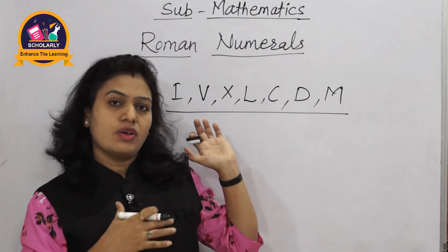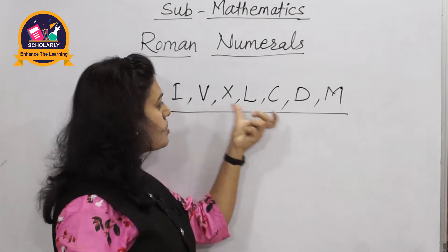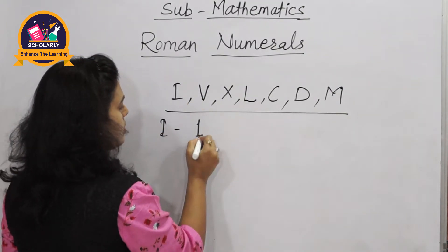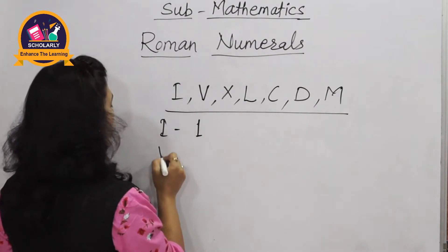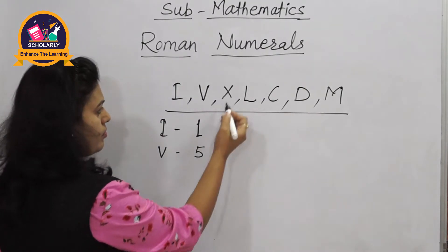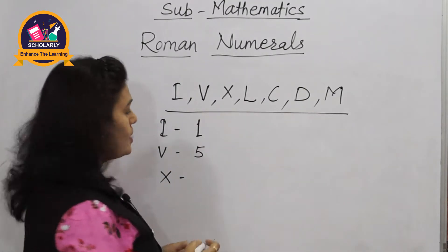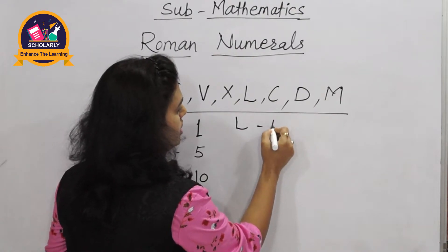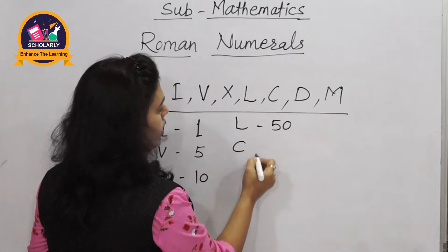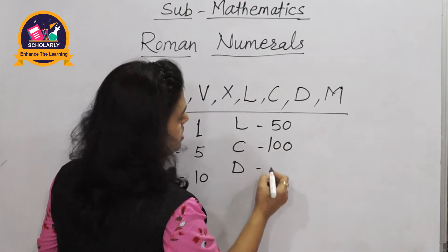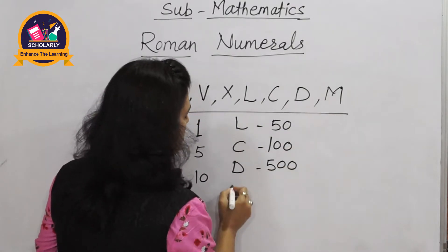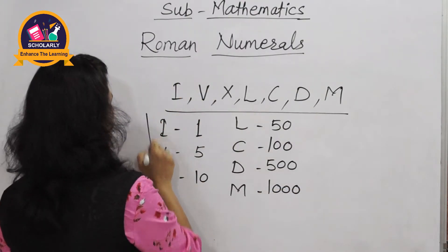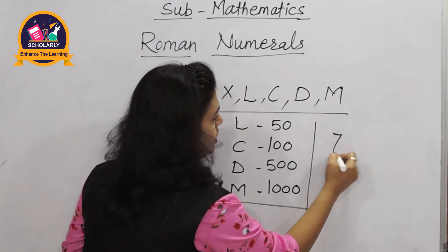These seven letters were used to write numbers — they are the main symbols in Roman script. The value of I is 1, V is 5, X is 10, L is 50, C is 100, D is 500, and M is 1000. So these are the seven symbols.